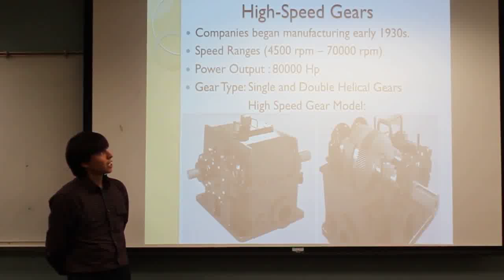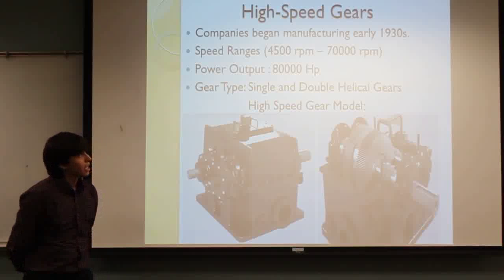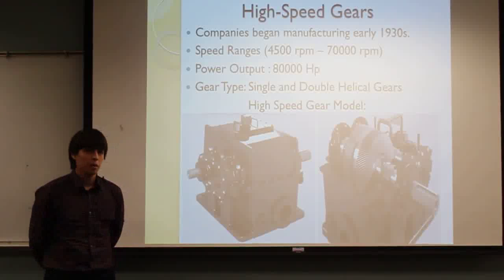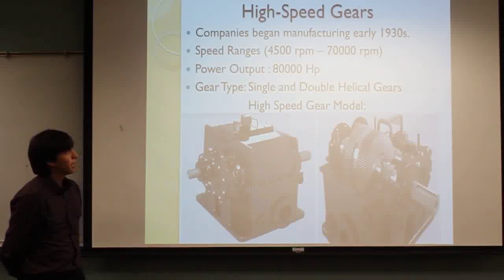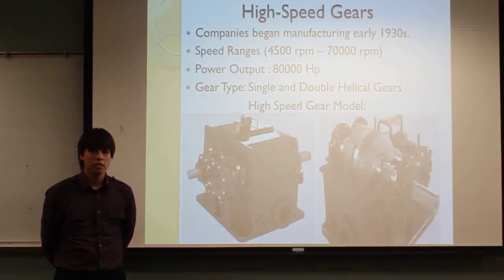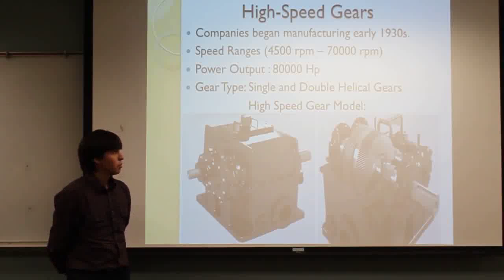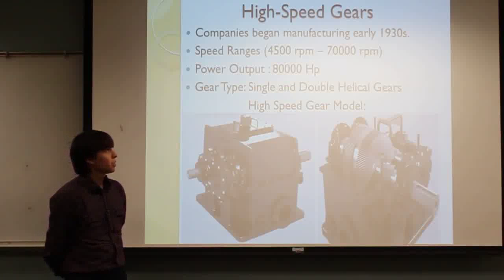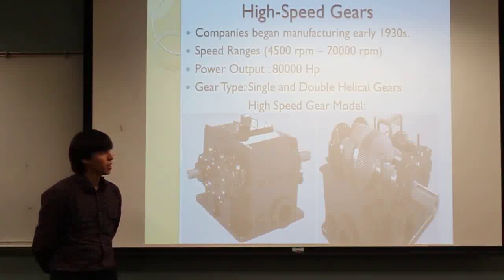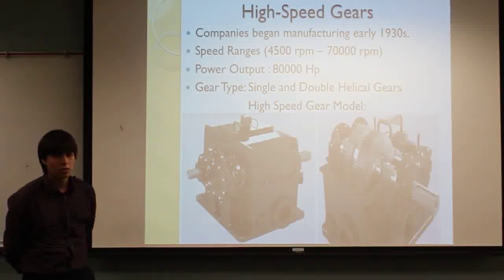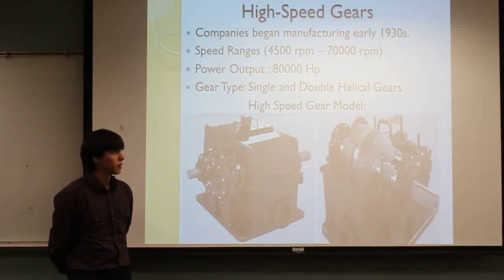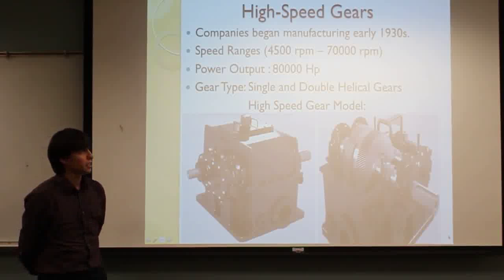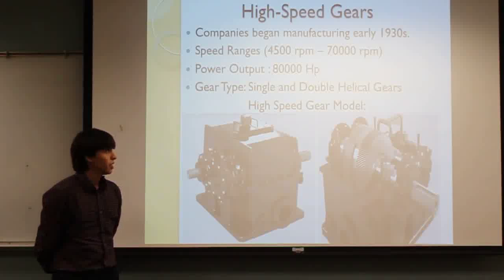The characteristics of high speed gears are that their speed ranges from 4,500 RPM all the way to 70,000 RPM, and they make a power output of 80,000 horsepower, but these numbers are increasing as time goes by. The main types of high speed gears are single and double helical gears, because these types provide durability and strength.